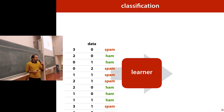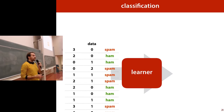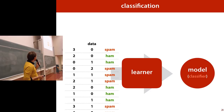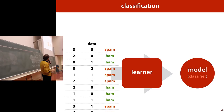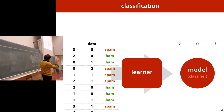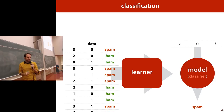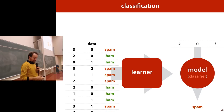We pass that dataset to a learning algorithm, which reads the dataset and comes up with a model. In this case, because we're doing classification, the model is called a classifier. The model is like a little computer program that takes one of these examples — which may be a new example, an email that wasn't in our dataset — and when we feed it to the model, it outputs a classification. It makes a guess whether it's spam or not. That's basic classification.